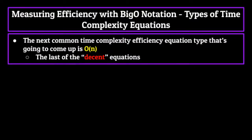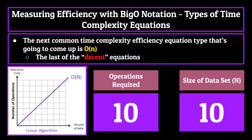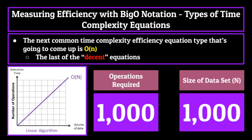O(n) is the next common time complexity equation. The graph of volume of data versus instructions needed is linear, meaning that for every element you add to the data set, the amount of instructions needed increases by the same amount. To perform a function with a time complexity of O(n) on a data set with 10 elements will take 10 instructions; 50 elements will take 50 instructions; 1000 elements, 1000 instructions, and so on. O(n) is really the last good time complexity equation — anything above this is considered inefficient and not very practical.